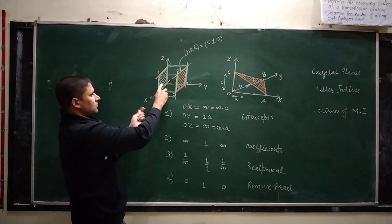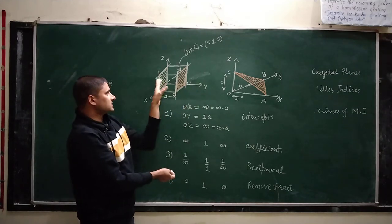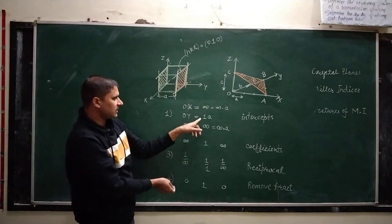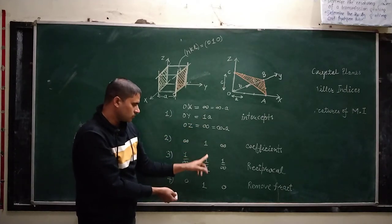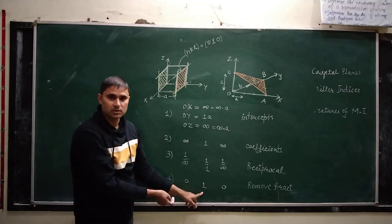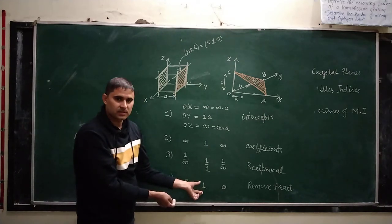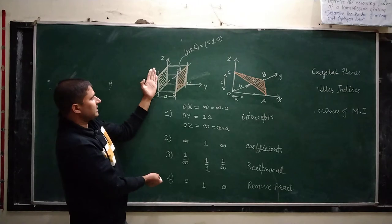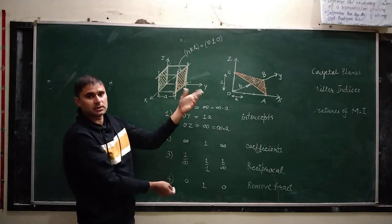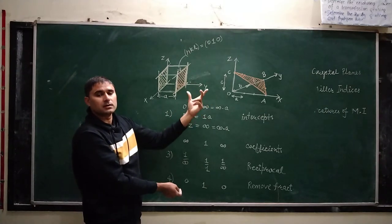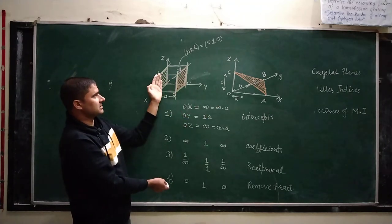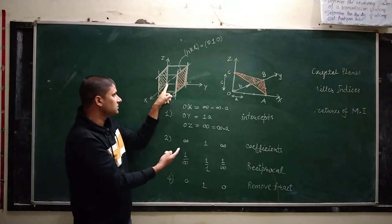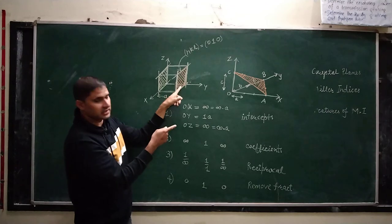But if you see what is the intercept on the y-axis — the side of this plane is not parallel to y-axis and its intersection is at 0. So if I take the intercept to be at 0, it will become 1 by 0, then it will become infinity. To find its Miller indices, we will take a plane which is parallel to this one. You know Miller indices represent a set of parallel planes in which lattice points are there in the crystal structure. So these are parallel planes and the Miller indices of this plane and this plane are the same. So you can have the idea of the Miller indices of the plane which is passing through the origin with the help of another plane which is parallel to it.